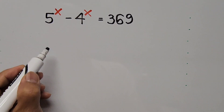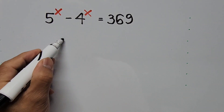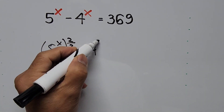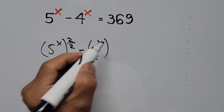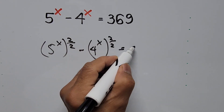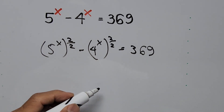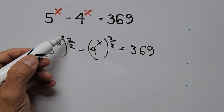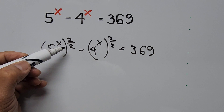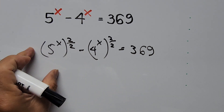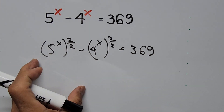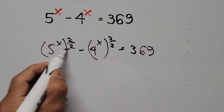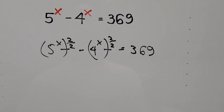So now we have 5 to the power of x raised to exponent 2 over 2, minus 4 to the power of x raised to exponent 2 over 2, equals 369. Since 2 over 2 equals 1, this won't change the value of each term on the left hand side of the equation. Now let's go ahead and manipulate the exponents.